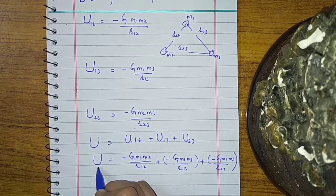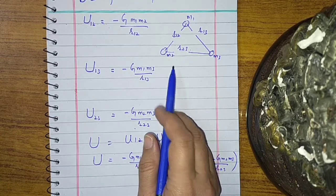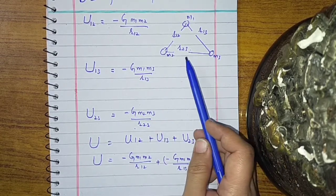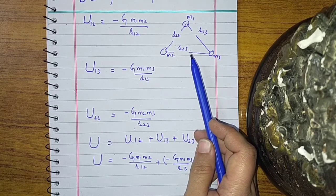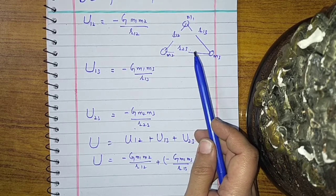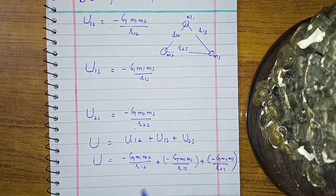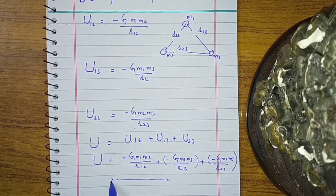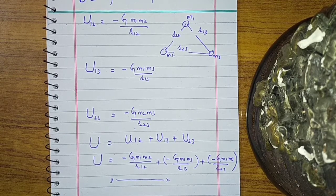This total potential energy is known as the binding energy of the particles, because this amount of energy is required to bind these particles together. The same amount of energy will be required to break these particles away from each other. This was all about gravitational potential energy and its relation with the Inverse Square Law.